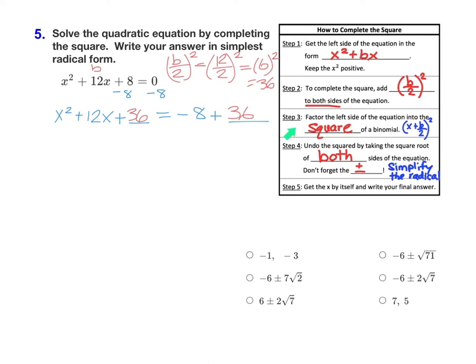Now for step number three, we can factor the left side of the equation into the square of a binomial using the same pattern that we just practiced with question four. It will always factor to x plus b over 2 quantity squared. So here, that would be x, and then the b over 2 value was 6, so we'd have x plus 6 squared, and then that's equal to negative 8 plus 36 would be 28.